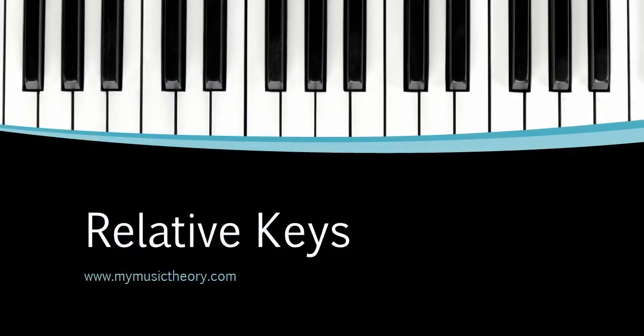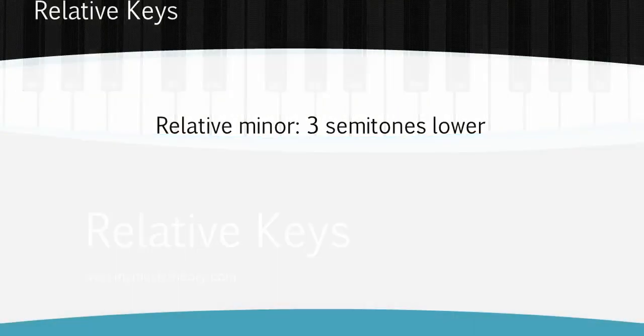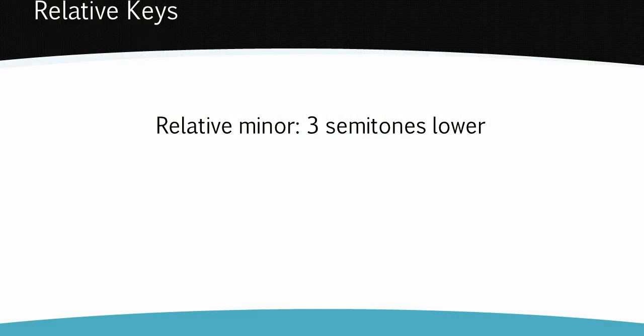All of the major keys share their key signature with a minor key. These pairs of keys are called relative keys. Each relative minor key is three semitones or half steps lower than the major key with the same signature.